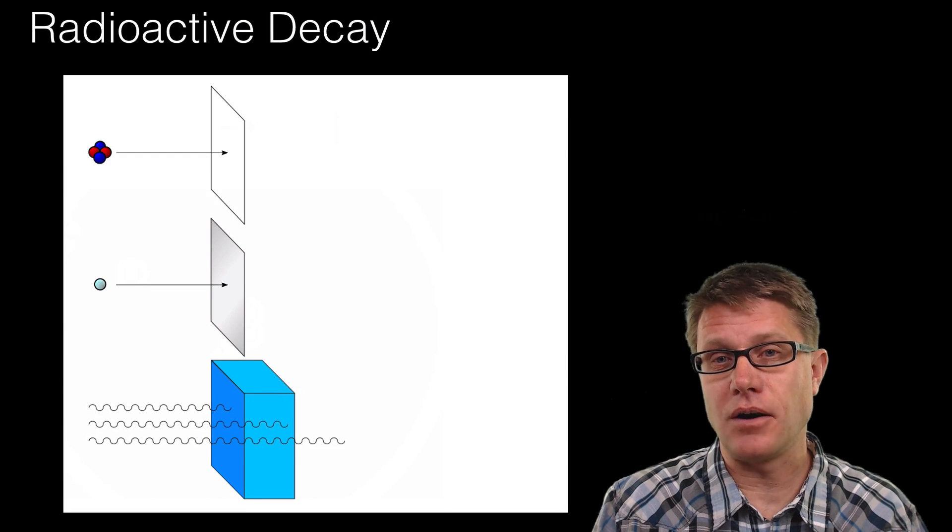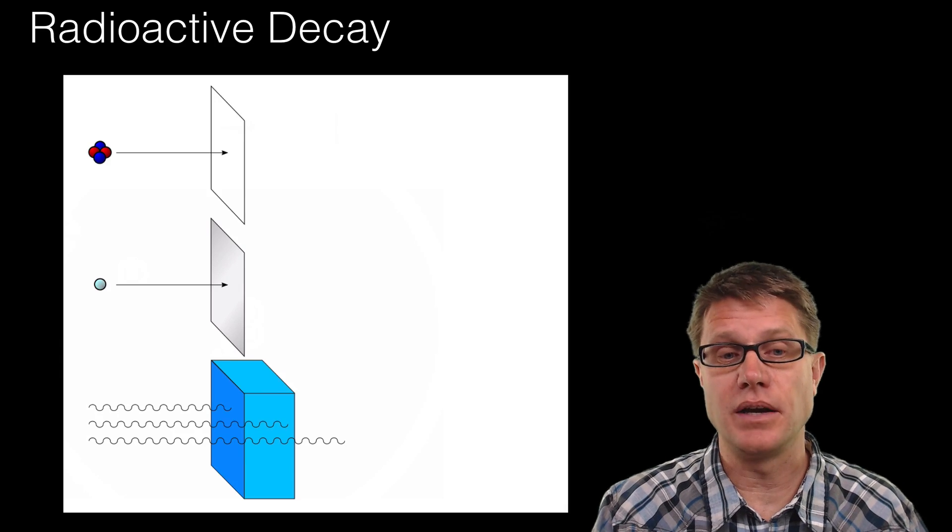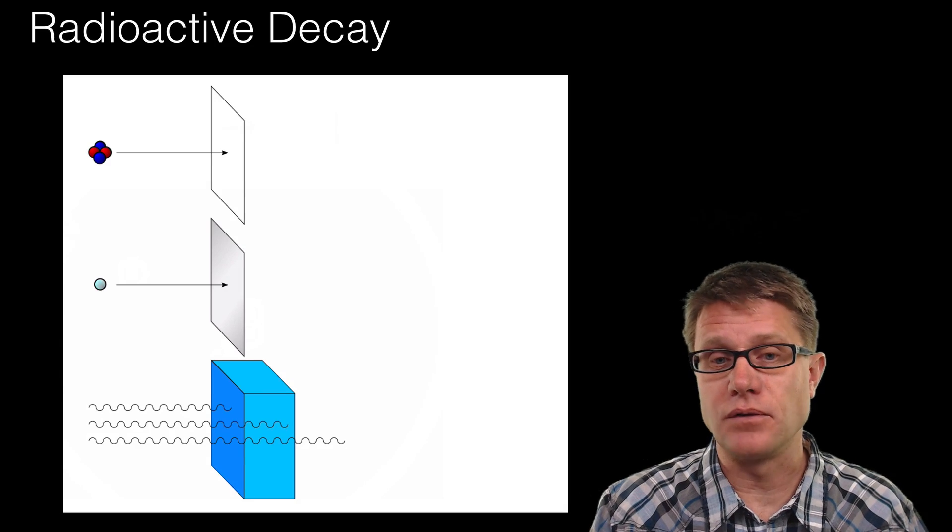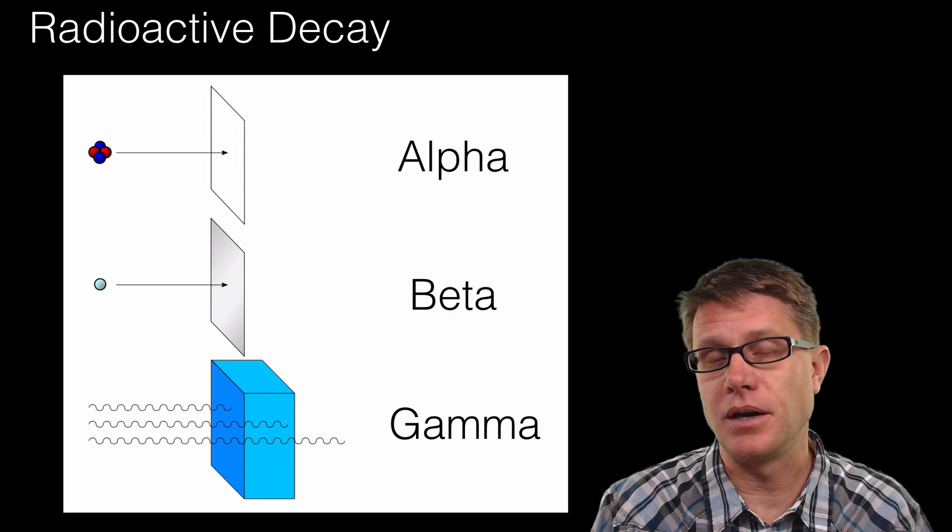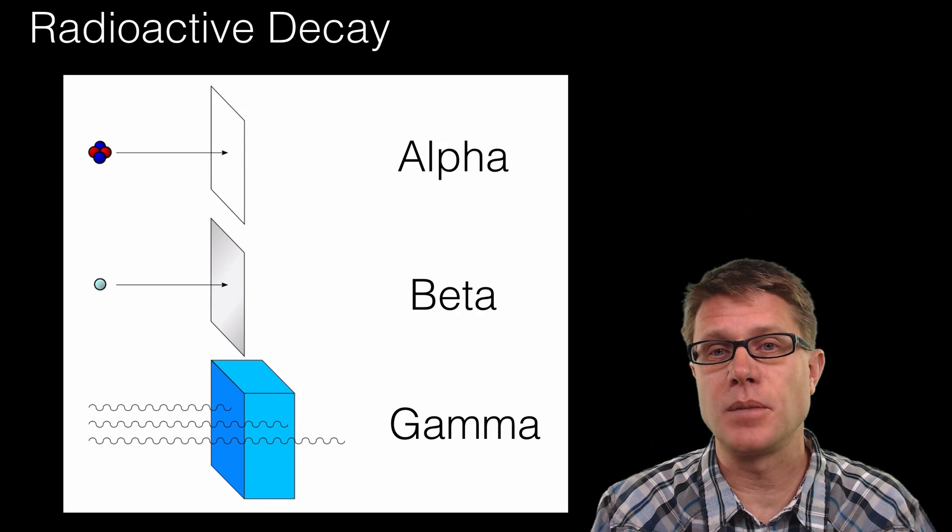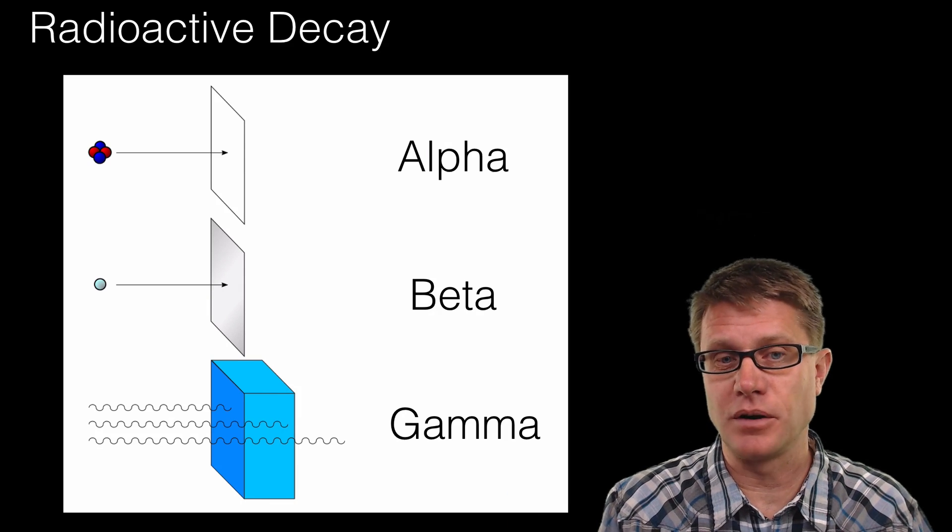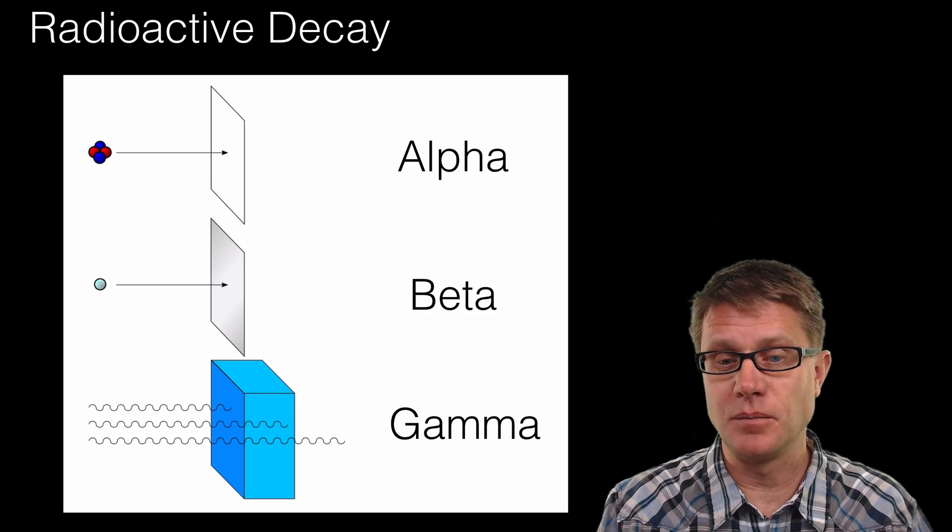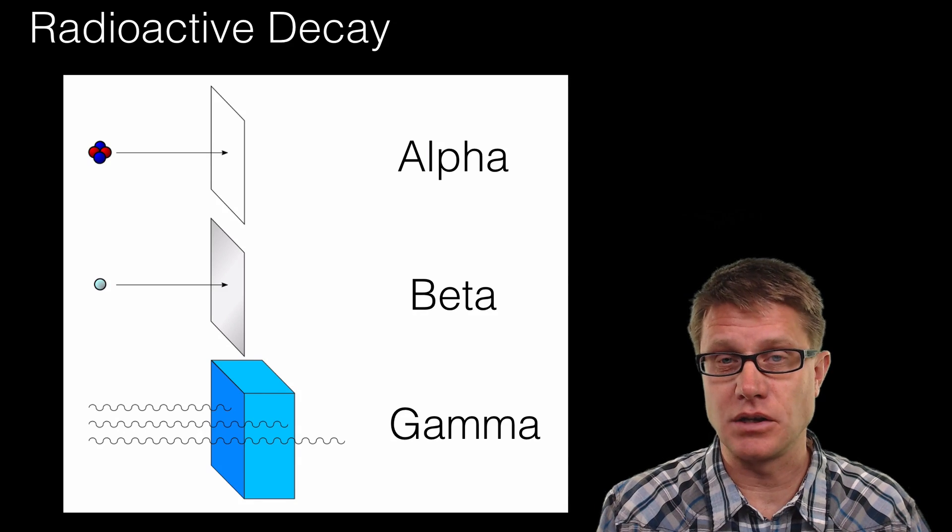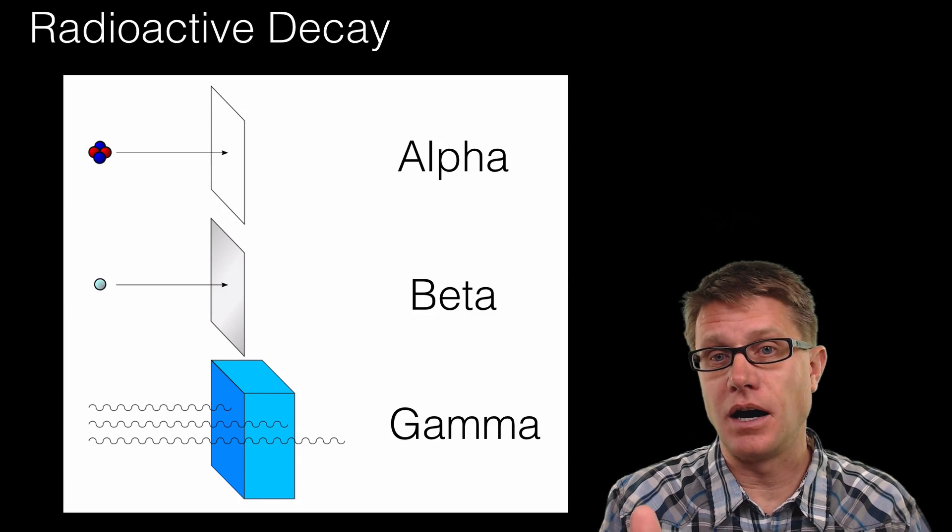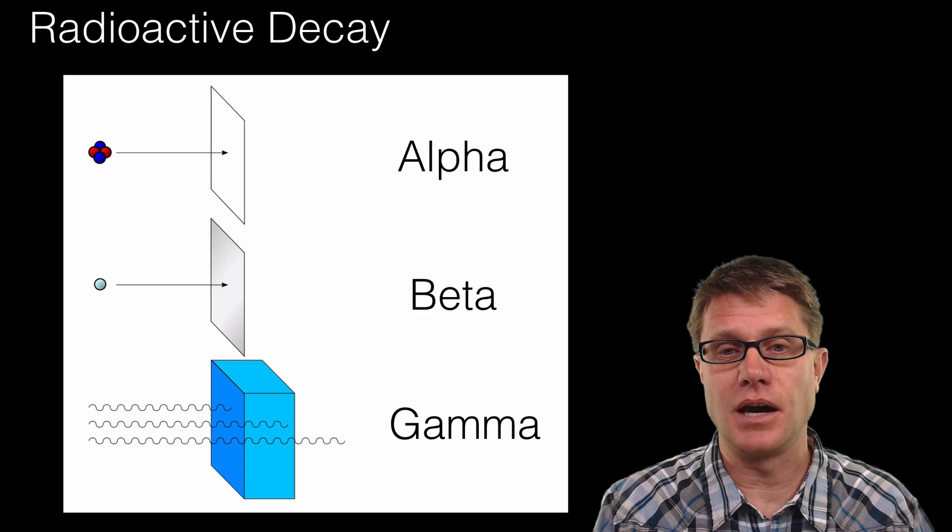Now radioactive decay is how an atom gives off energy through radiation. It comes in many different forms. The ones we will talk about are alpha, beta and gamma. They have certain amounts of energy. You could stop an alpha particle with a little bit of paper. Beta requires aluminum. But gamma has a huge amount of radiation and requires a long section of lead to actually stop the gamma radiation.